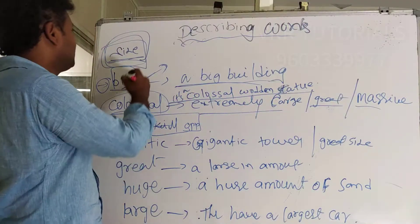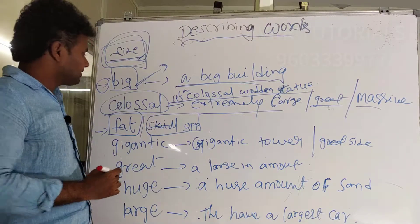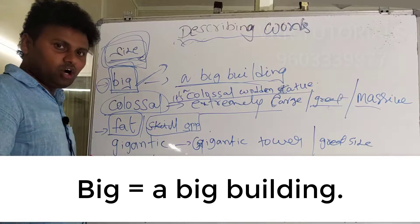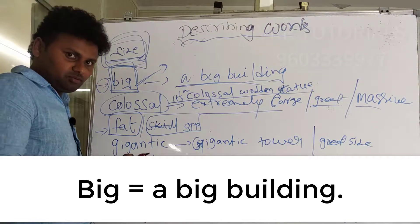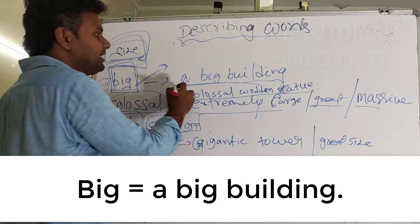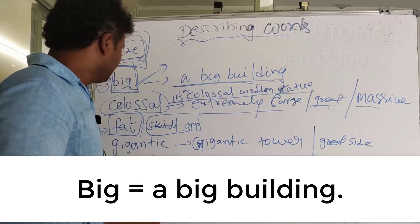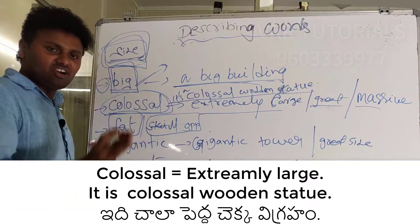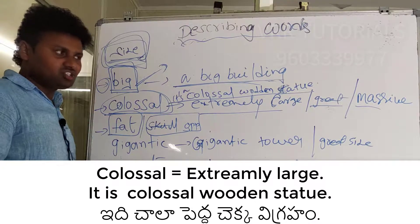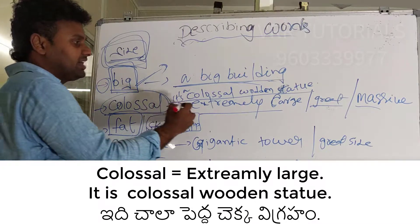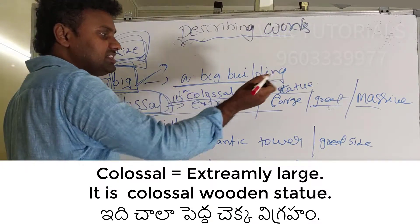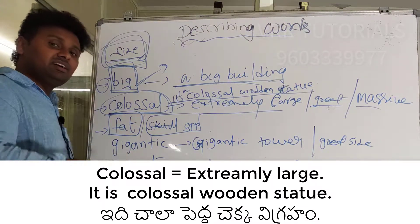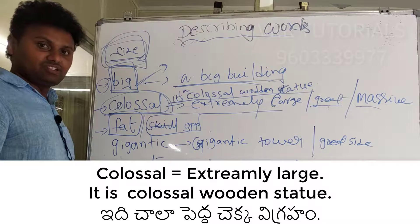The first describing word for size is 'big' — you all know that. For example: a big building. Next is 'colossal,' which means extremely large or great. For example: it's a colossal wooden statue, meaning it is an extremely large statue.